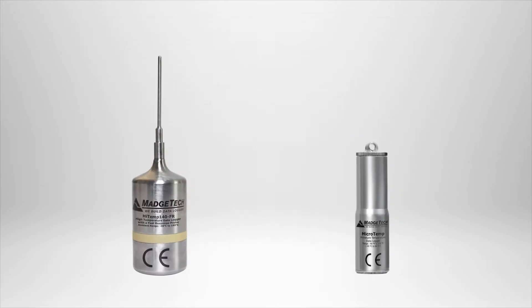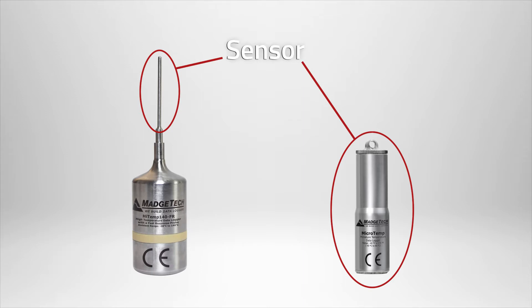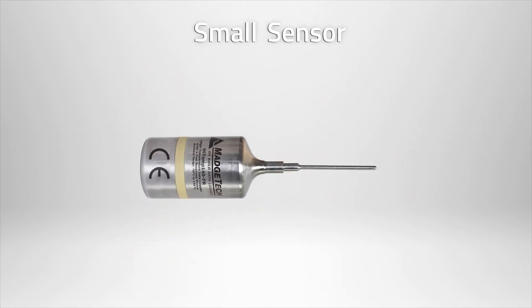Data loggers with smaller probes, or more specifically, smaller sensors, will react faster to temperature change than a logger outfitted with a larger sensor. This is simply because a smaller sensor will take less energy and time to heat up than a larger sensor.